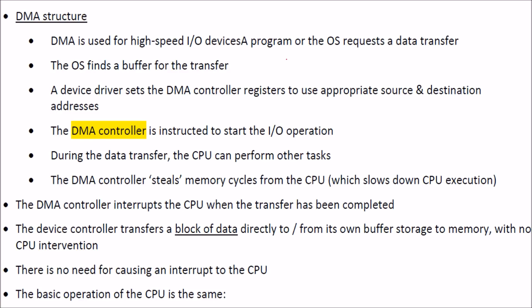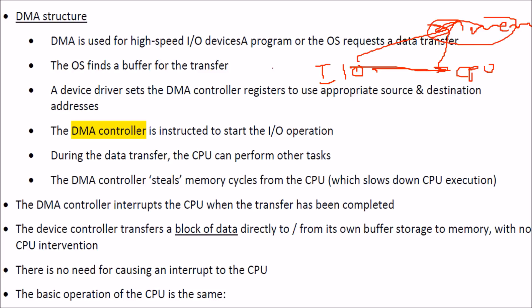DMA (Direct Memory Access) is simple in concept. Normally I/O goes through the CPU to reach memory. DMA bypasses this by having a DMA controller transfer data directly from the I/O device to memory without CPU involvement.